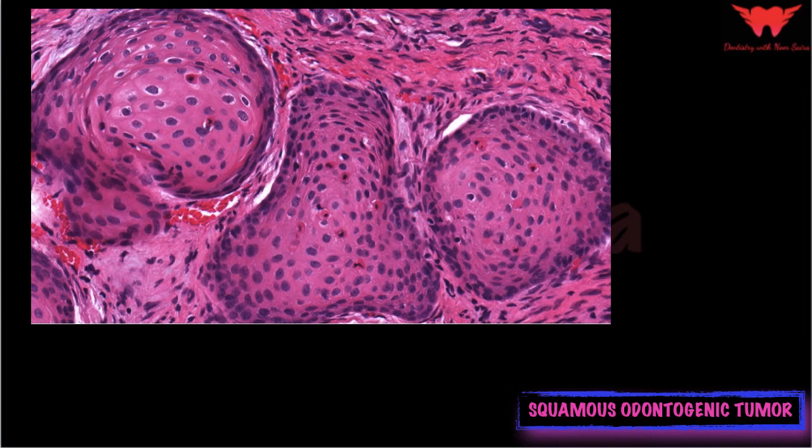Talking about the histopathology — this is probably the most important aspect of the tumor, as the lesion is often mistaken on histological identification as acanthomatous ameloblastoma or as a well-differentiated epidermoid carcinoma. Most investigators believe that it represents a benign odontogenic neoplasm probably arising from the cell rests of Malassez, although hamartomatous epithelial proliferation has also been considered.